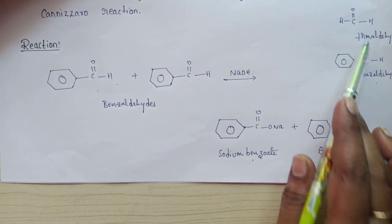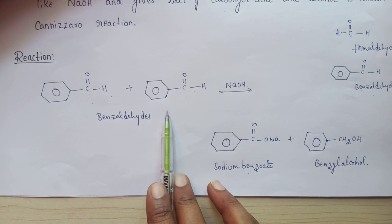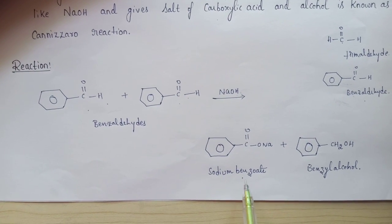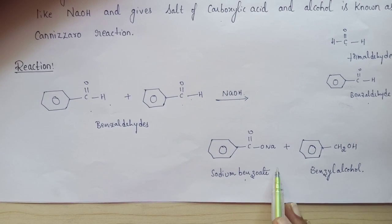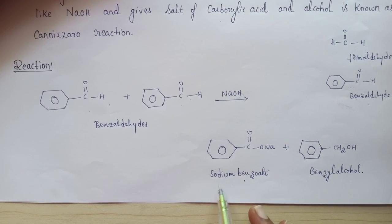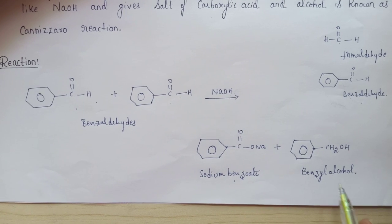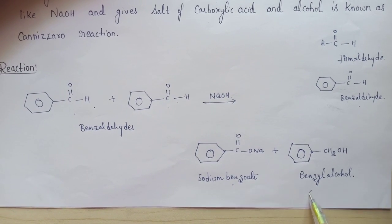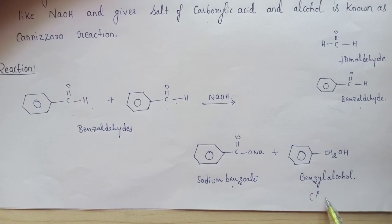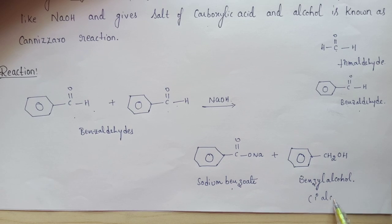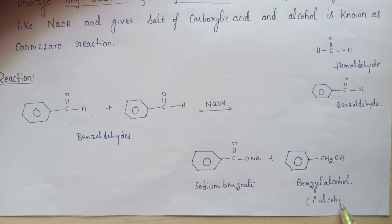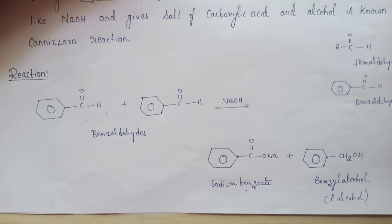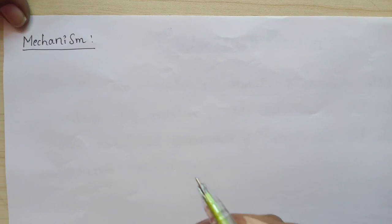If we take formaldehyde instead of benzaldehyde, it gives a molecule of sodium formate, and another product is methanol as the alcohol. We always get a primary alcohol by the Cannizzaro reaction. Coming to the mechanism — how the Cannizzaro reaction proceeds.